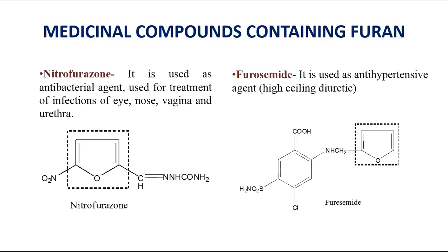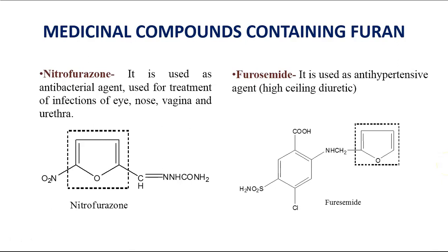Let us see the medicinal compounds which contain a furan ring. Nitrofurazone is an antibacterial agent used for treatment of eye infections, nose infections, and vaginal and urethral infections; it belongs to the nitrofuran antibacterial class. Another drug containing the furan nucleus is furosemide, which is a diuretic agent — specifically a high-ceiling diuretic.